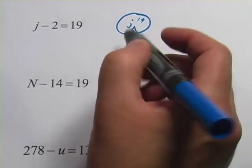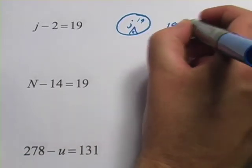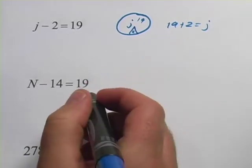So if you think about that, j is made up of 19 and 2. So 19 plus 2 is what j equals, and that would be 21.